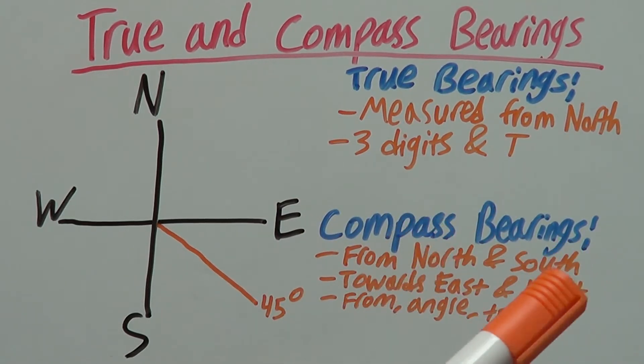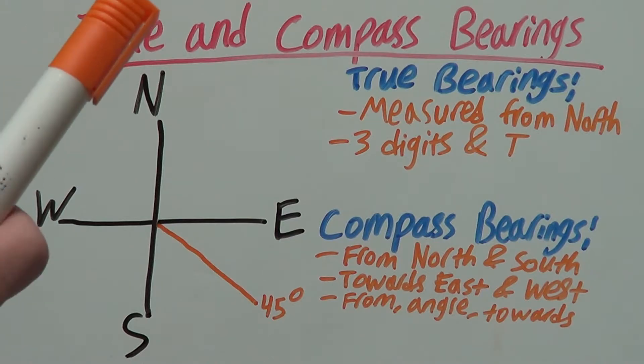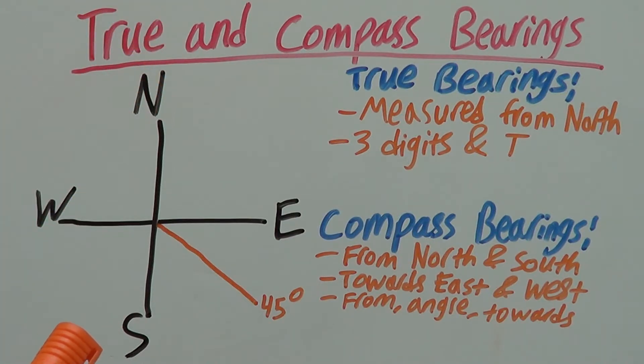On the other hand, compass bearings are measured from either north or south, whichever is closer to the angle, and they measure towards east or west.